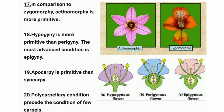Point eighteen: hypogyny is more primitive than perigyny, and the most advanced condition is epigyny. In hypogyny, sepals, petals, and stamens attach below the ovary — for example, the tomato. In perigyny, sepals, petals, and stamens are fused at the base — for example, the cherry. In epigyny, sepals, petals, and stamens arise from the top of the ovary — for example, the daffodil.